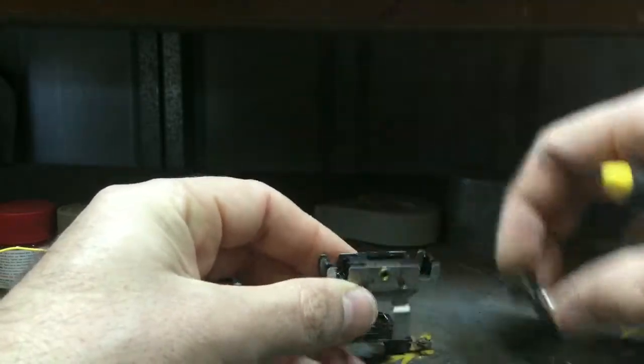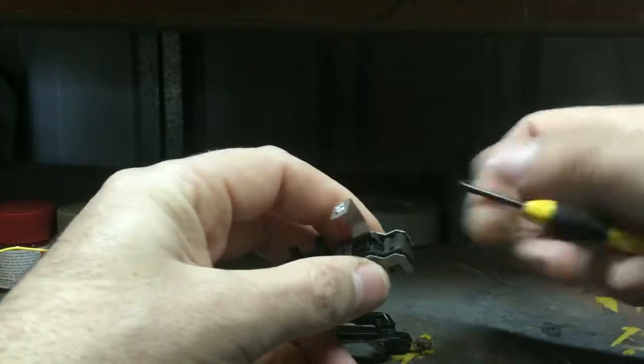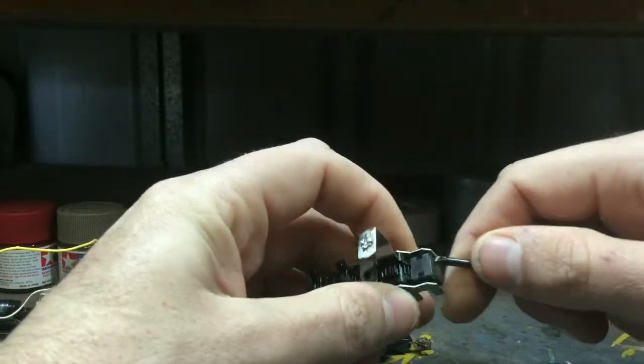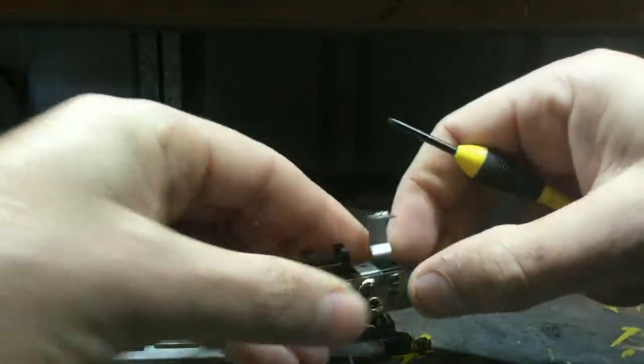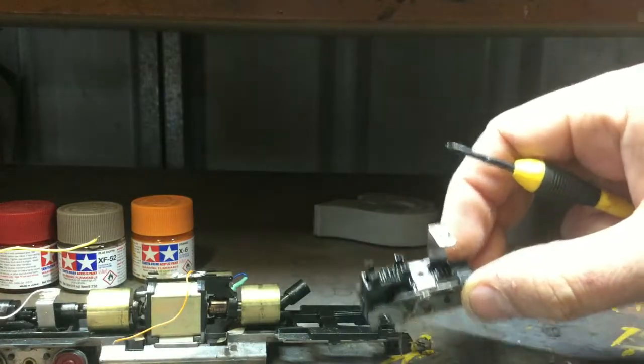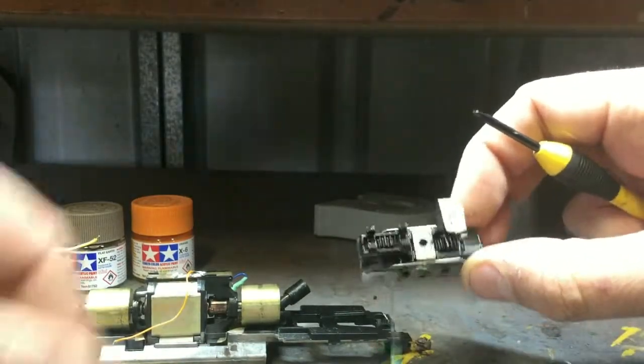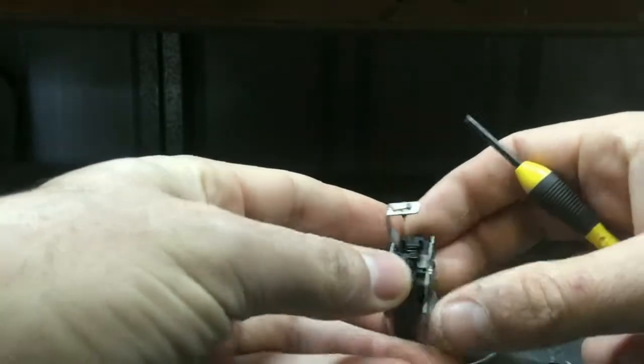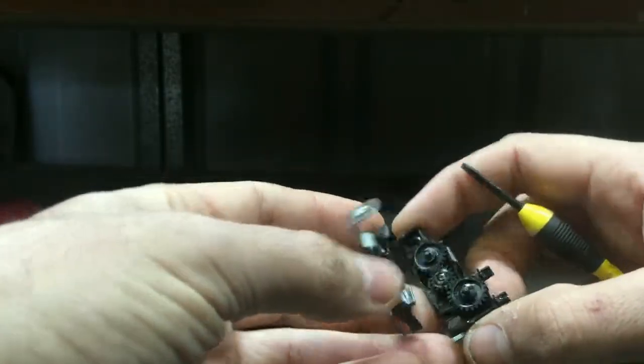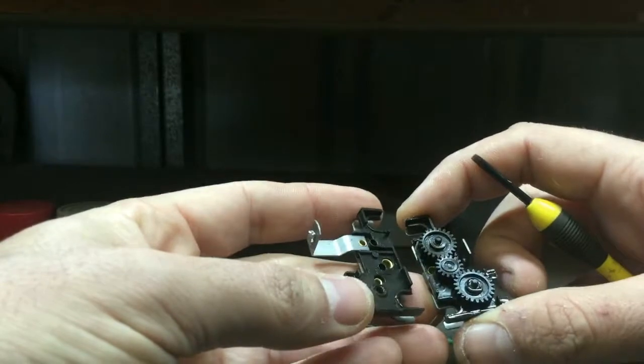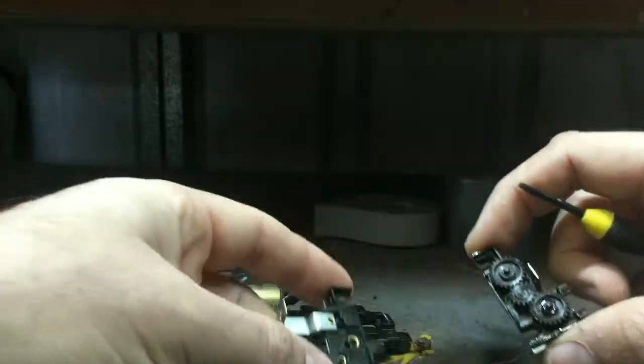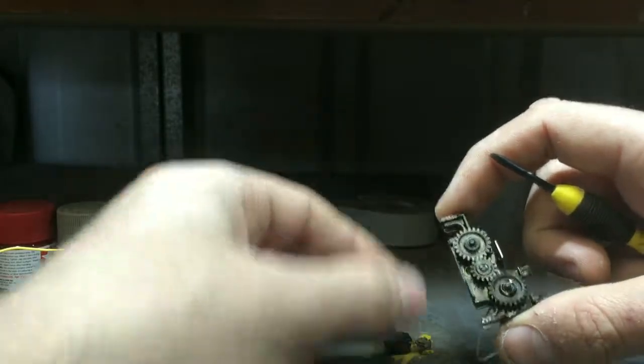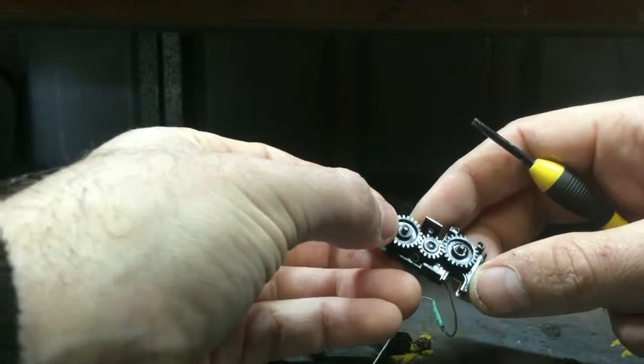There's a little tab sitting right here, and this is the same on most of your Athearn Blue Boxes. Once you've got that little tab out, the whole drive tower just separates beautifully like that. She looks pretty good inside, not too bad, probably needs a bit of grease.